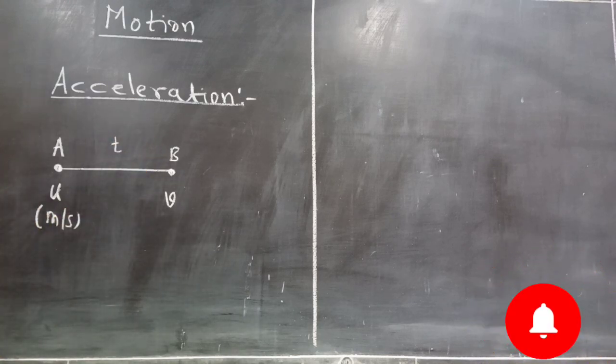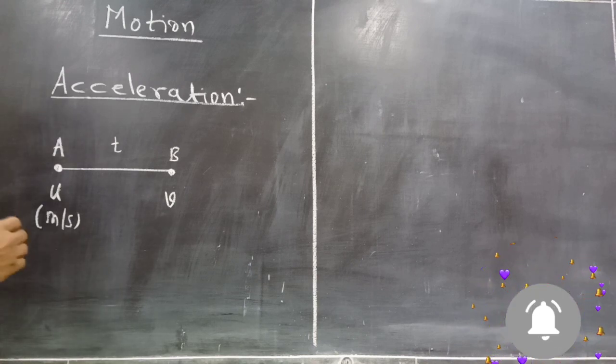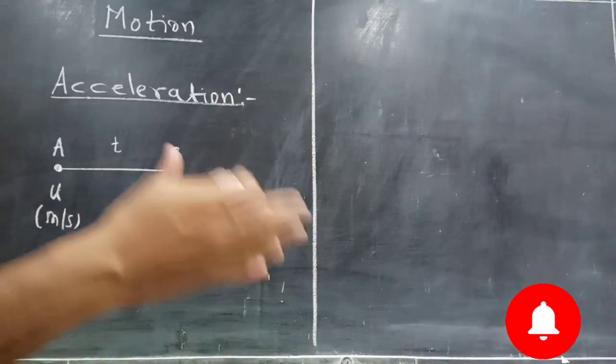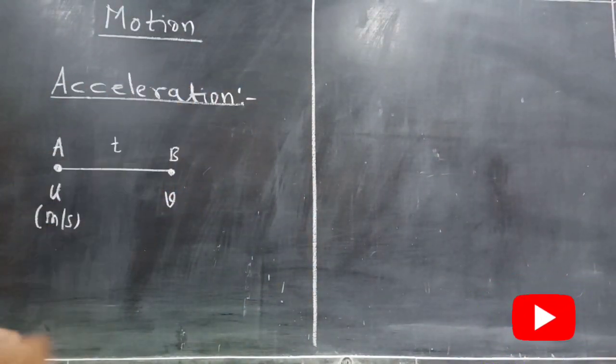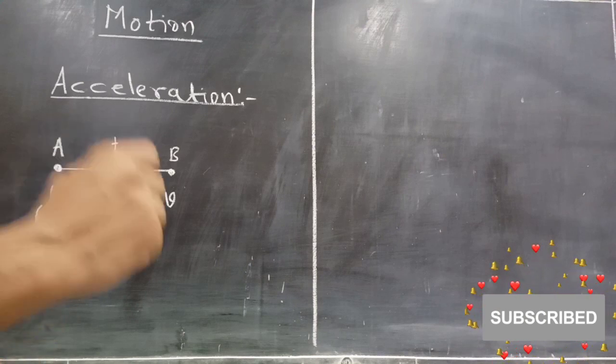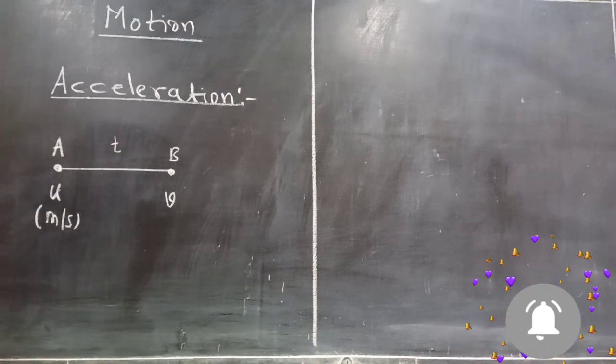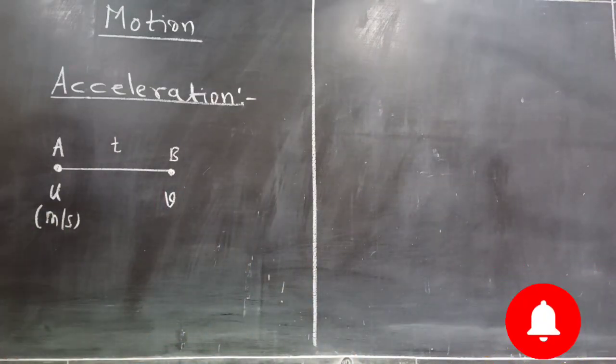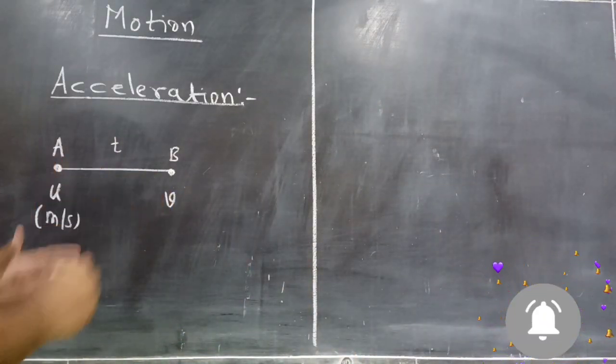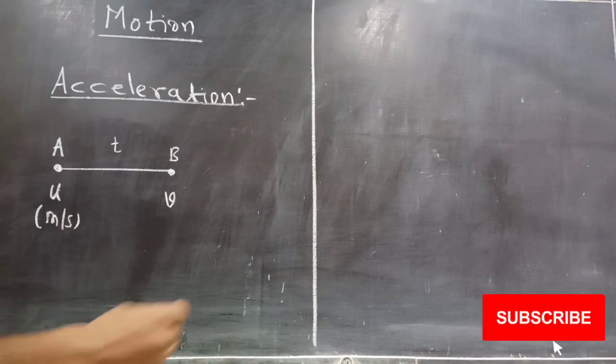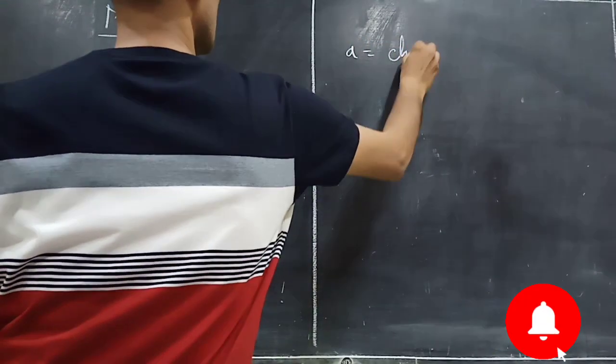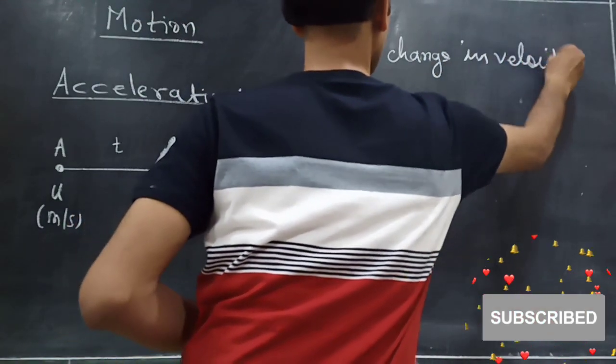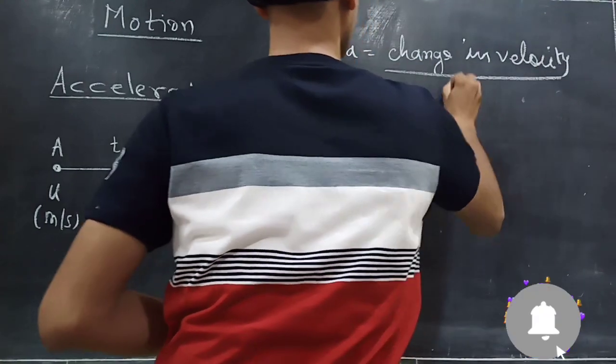Now, how we define acceleration here? You know, velocity changes from U to V. There should be change in velocity. It may be increase in velocity or it may be decrease in velocity. We will discuss both cases. But there should be some change in velocity, which is compulsory. Because acceleration is nothing but change in velocity upon time.